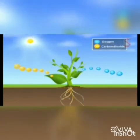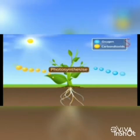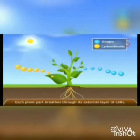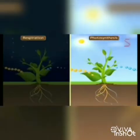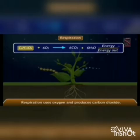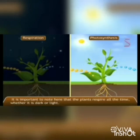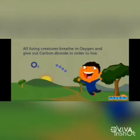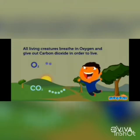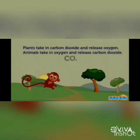Thus, respiration and photosynthesis maintain the balance in the amount of oxygen and carbon dioxide in the air. Aur isi tarha se, respiration aur photosynthesis atmosphere mein oxygen aur carbon dioxide ke balance ko maintain karta hai. The carbon dioxide released by animals and plants during respiration is used up by the plants during photosynthesis. And the oxygen released by plants in the process is used by both animals and plants for respiration.